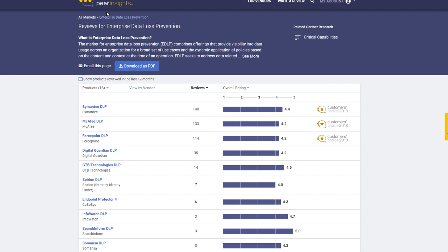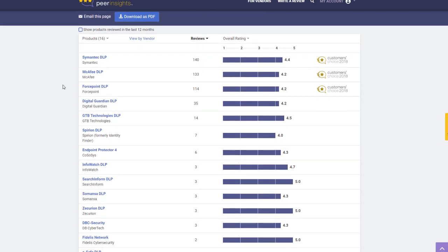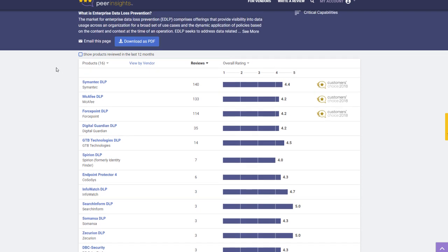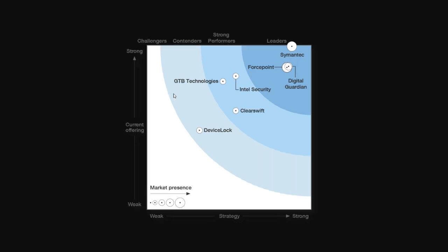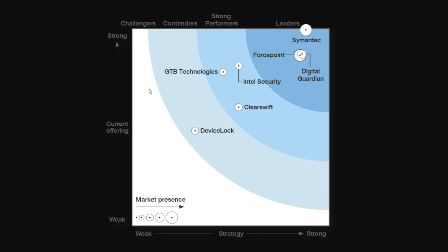There is also Gartner Peer Insights, where you can see ratings for different vendors and reviews for each vendor. There is also a Forrester report from around 2016 that identifies some of these vendors — like Symantec, Forcepoint, and Digital Guardian — on the leaderboard. All the reports we have are not really being renewed; there is no new report to look at for data loss prevention solutions.